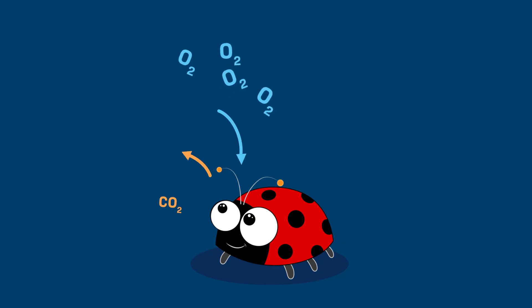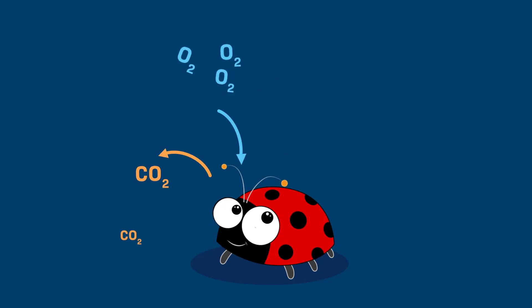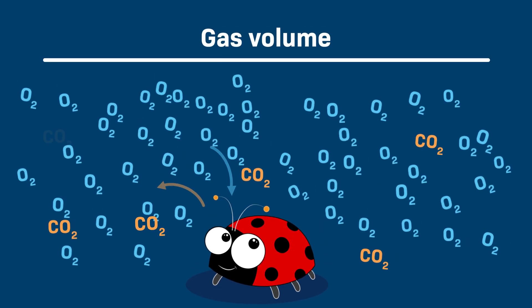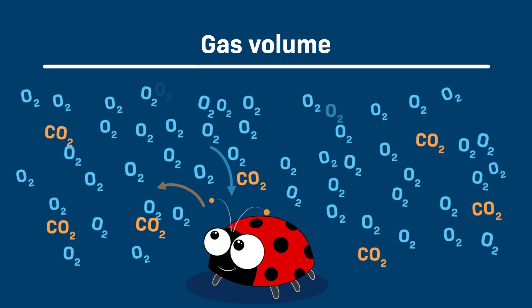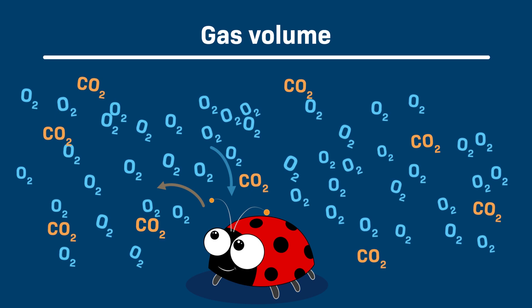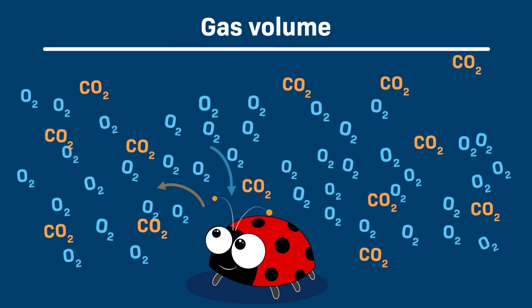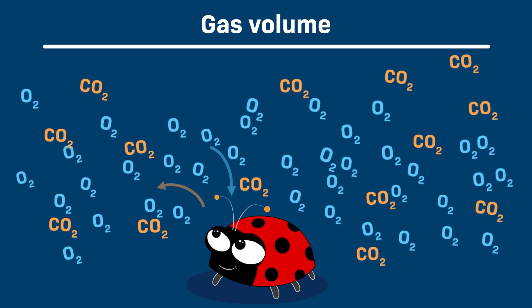Normally, as organisms breathe in and out, they produce one molecule of carbon dioxide gas for every molecule of oxygen gas they consume. Since we're using the rate of oxygen consumption as an indicator of cellular respiration, we have to make sure that the other gas—carbon dioxide—doesn't mess up our results and influence the gas volume in the respirometer.